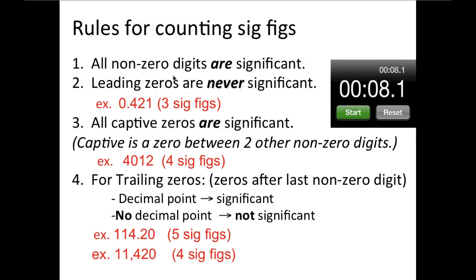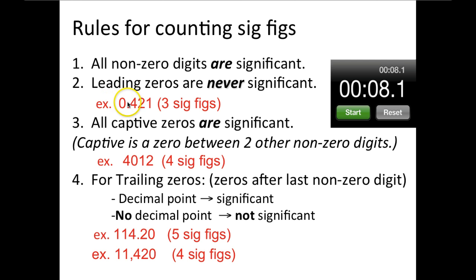Leading zeros are never significant. So in this number, this zero — because it's leading, or in front of all the other numbers — is not significant. So if I were to ask you how many sig figs are in this number, you would say 3: 1, 2, 3.